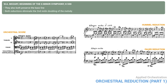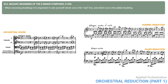Notice that both reductions eliminate the second violin doubling of the melody. When removing doublings, it's important to ask yourself which one is the real line and which one is the added doubling. In this case, the main line is clearly the top one. Playing the lower octave alone would just confuse it with the accompaniment. Why not keep both octaves? The purpose of the doubling in the orchestration is simply to give the melody a richer sound. On the piano, however, it would interfere with the accompaniment figuration.